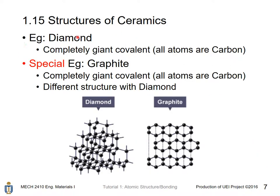Diamond is completely giant covalent and all atoms are carbon. Graphite is also completely giant covalent with all carbon atoms, but has a different structure from diamond. In diamond, bonding extends throughout the solid. In graphite, covalent bonds extend only within a single layer, and between layers they are connected by secondary bonding — dispersion forces.